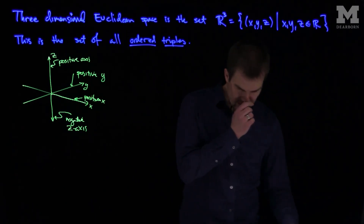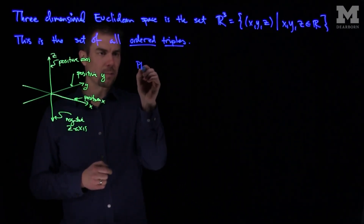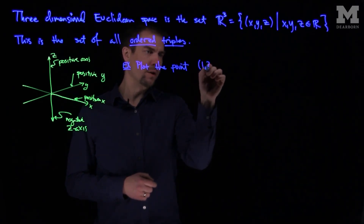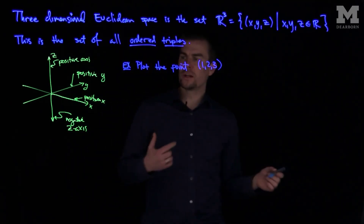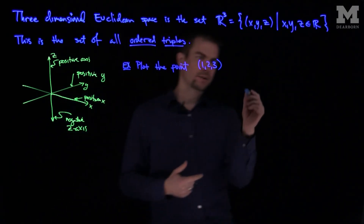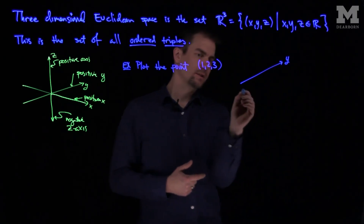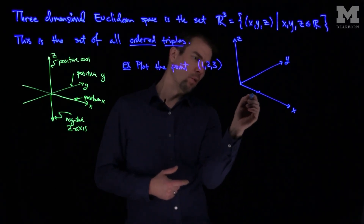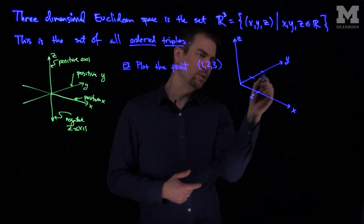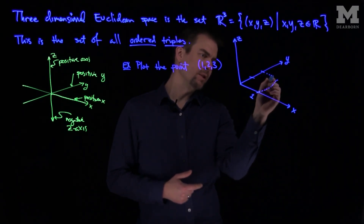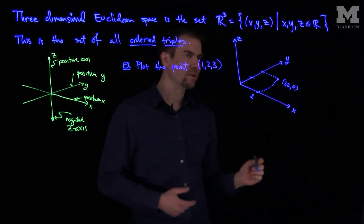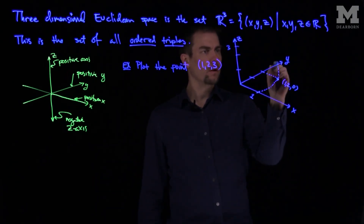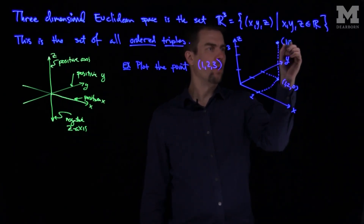We can plot points in three-dimensional space. If I want to plot, for example, the point (1, 2, 3), I would only need to look at the positive x-axis, positive y-axis, and positive z-axis. Here's my positive y-axis and here's my positive x-axis — I'm looking at one-eighth of three-dimensional space. I'll go over one unit on the x-axis, then up two units on the y-axis. That puts us to this point in the xy-plane at (1, 2, 0). Then we go up three units: one, two, three — that's z equals three. And that's the point (1, 2, 3).